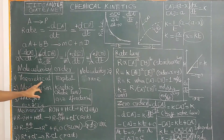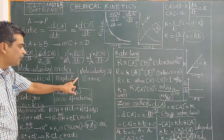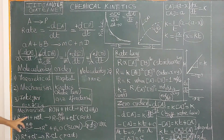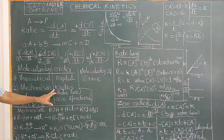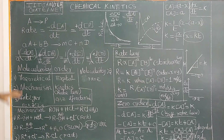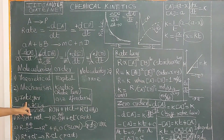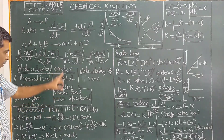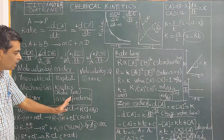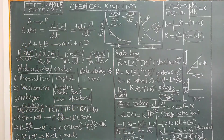Molecularity is obtained from the theoretical mechanism, whereas order is obtained experimentally from the rate law. Molecularity can only be a positive integer: 1, 2, 3. In the case of order of reaction, N can be 0, 1, 2, 3 as integers, and also fractional values like 0.25, etc.